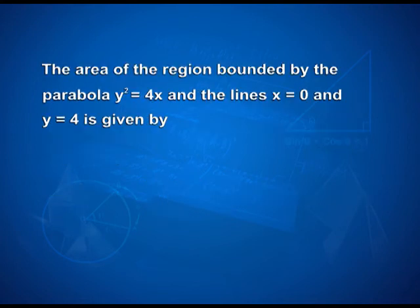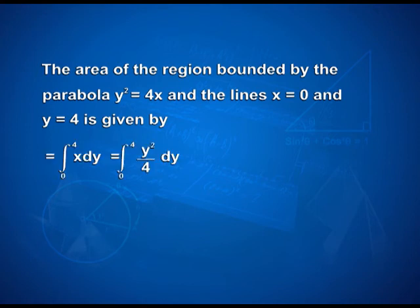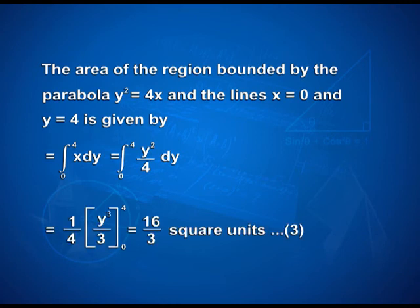The area of the region bounded by the parabola y² = 4x and the lines x = 0 and y = 4 is given by integral from 0 to 4 of x dy = integral from 0 to 4 of y²/4 dy, giving (1/4)[y³/3] from 0 to 4, which equals 16/3 square units. From equations 1, 2 and 3, it follows that the area of the square is divided by the given curves into 3 equal parts.